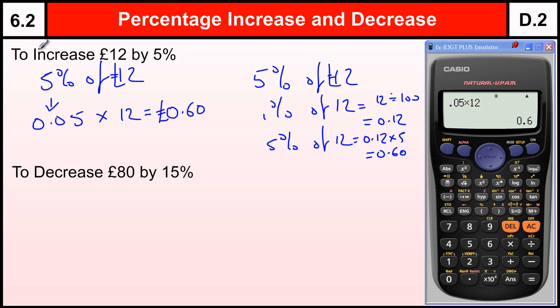And we've got the same answer here. To increase 12 by 5%, we do 12 plus 0.60, which gives us £12.60. And that would be our answer. We've increased £12 by the 5% we found out, which was 60 pence.